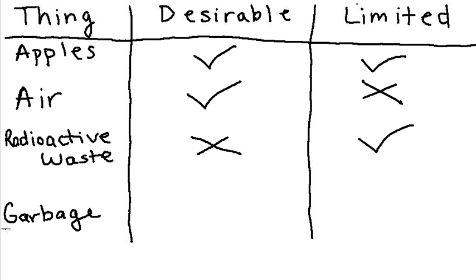Now, let's consider finally garbage. Is garbage desirable? Definitely not. Is garbage limited? Nope, you can have as much garbage as you want. So, of these four things, we've decided that the only one which is scarce is apples.